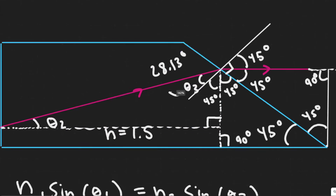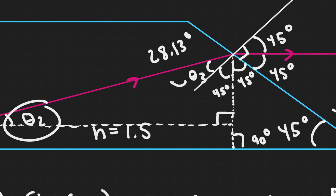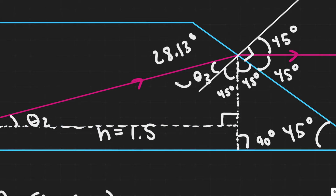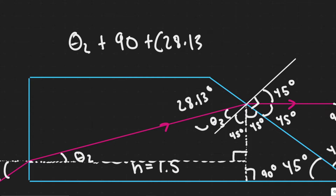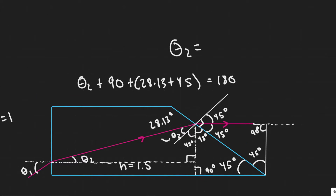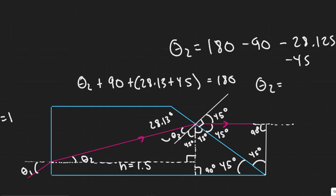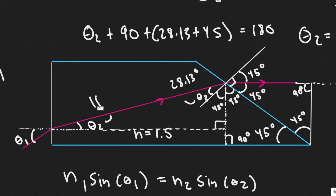Now that we have theta 3 — 28.13 degrees — we can solve for theta 2, since all the angles in this triangle must add up to 180. We have theta 2 plus 90 plus 28.13 plus 45 equals 180. Solving for theta 2: 180 minus all those values gives us theta 2 equals 16.87 degrees.